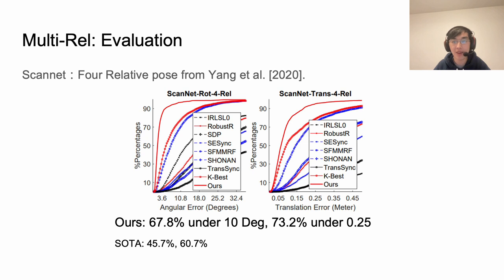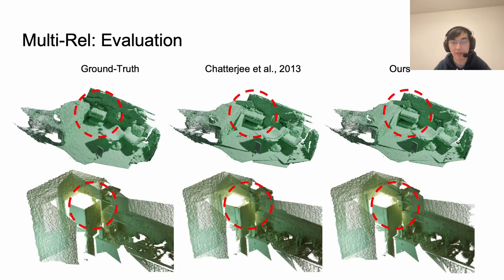The second evaluation is based on the scanner dataset. For the input we retrieve four possible relative poses between overlapped frames based on a spectral matching method. Our method achieves 67% accuracy in rotation with 73% accuracy in translation, which is both much better than the state-of-the-art. Here are some visualizations from the scanner results. We can see that our method achieves better accuracy in portraying the details.